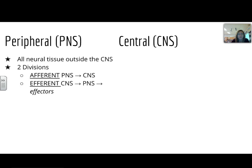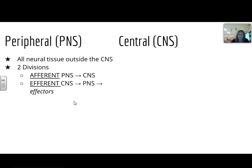The peripheral is basically all the neural tissue outside of the central nervous system. And there are two divisions, the afferent and the efferent. The afferent will take a sensory signal from the PNS to the central nervous system, and then the efferent will take however the information is processed and send a signal back to the peripheral nervous system to affect your organs or tissues to make a response.